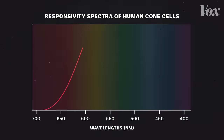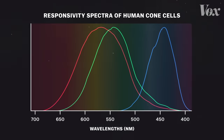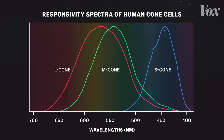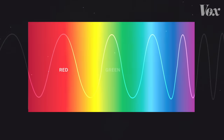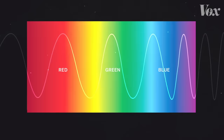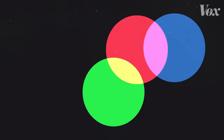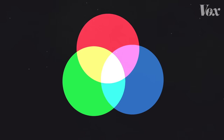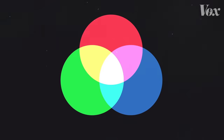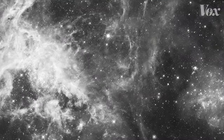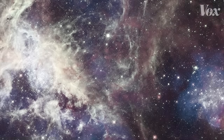We have three different types of cones that are sensitive to long, medium, and short wavelengths of light, which roughly correspond to red, green, and blue on the visible spectrum. These are the primary colors of light. Every other color is some combination of these three, and that combination is the guiding principle in colorizing black and white images.